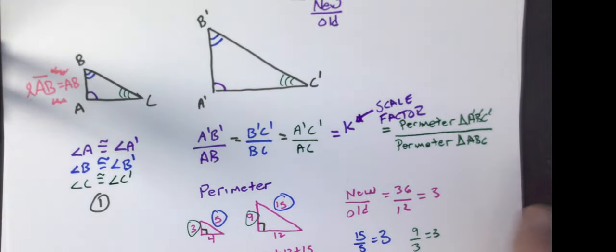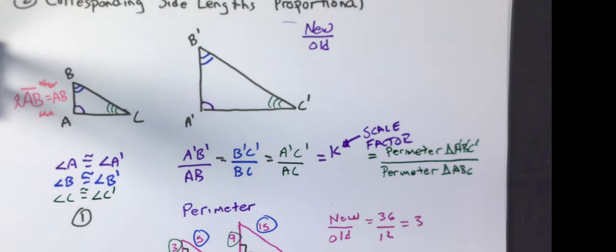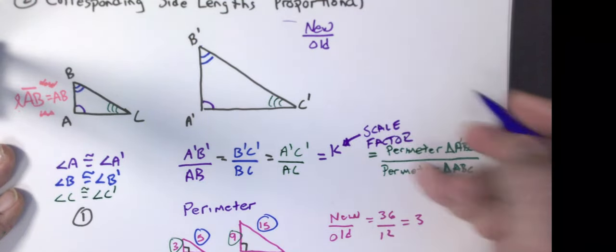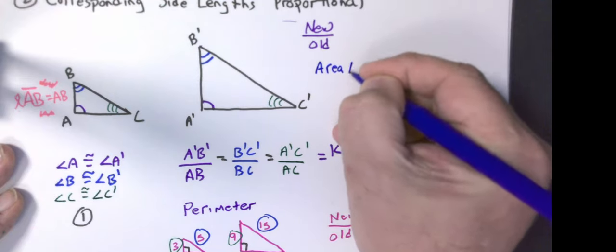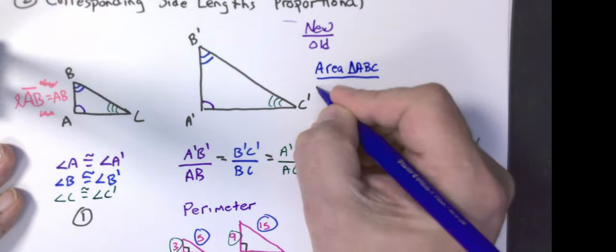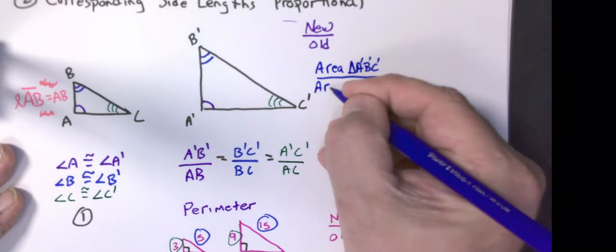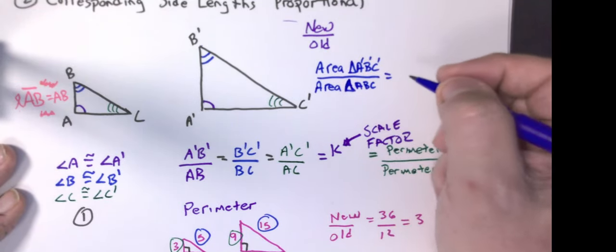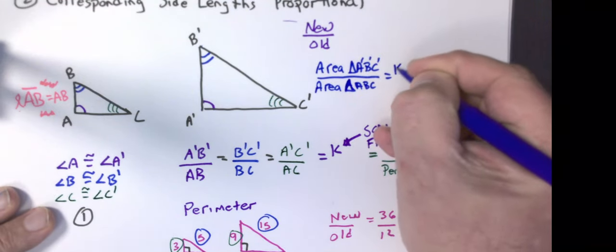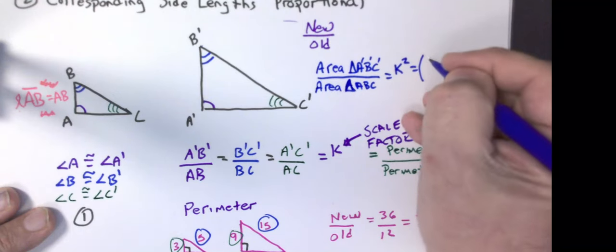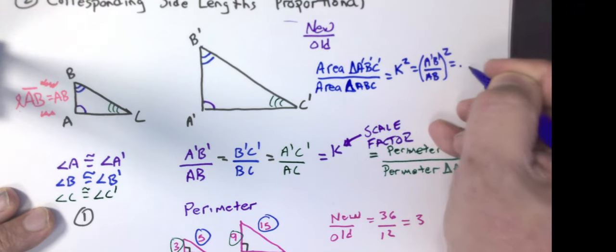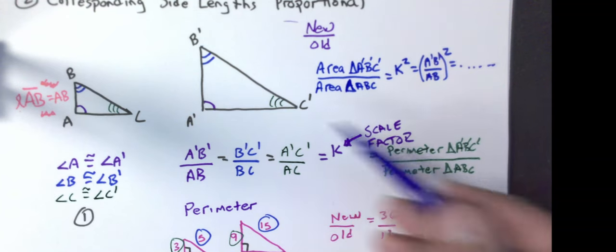So going back to our original setup: k is the scale factor for perimeter over perimeter. The area of triangle A'B'C' over the area of triangle ABC equals the scale factor squared, which is (A'B' over AB) squared — and any of those corresponding side ratios squared will give us the area ratio.